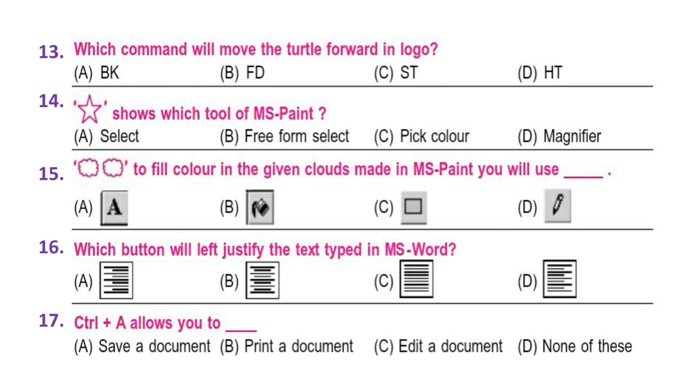Question 16: Which button will left justify the text typed in MS Word? The options are given. Look at them carefully and select your answer. Question 17: Control plus A allows you to: A. Save a document, B. Print a document, C. Edit a document, D. None of these.